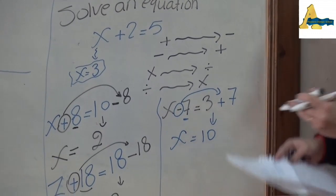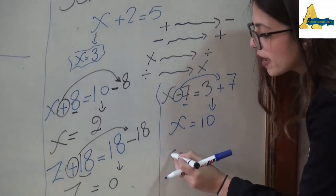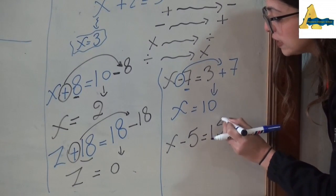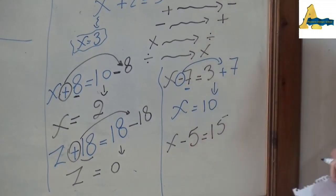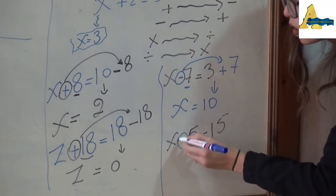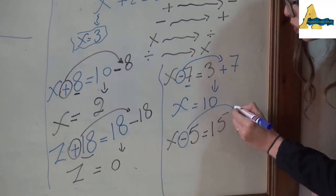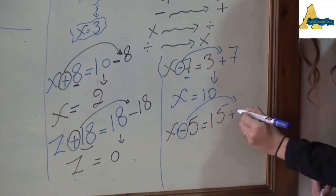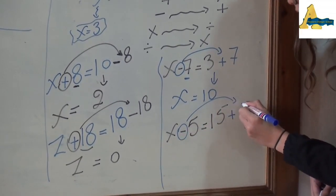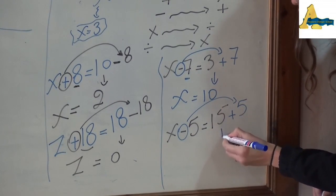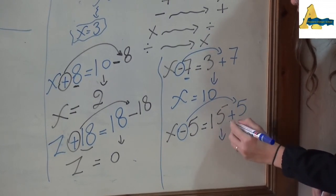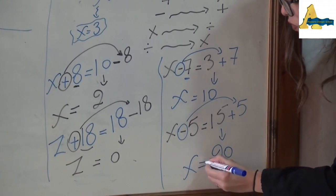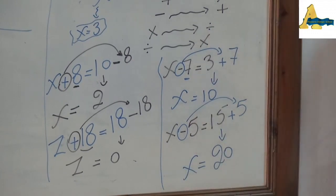Another example: x - 5 = 15. Minus will go after the equal as plus. Minus 5 will go to plus 5. So 15 + 5 = 20, that means x = 20.